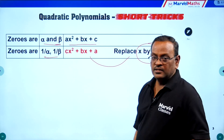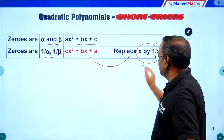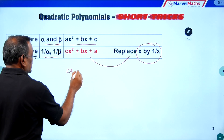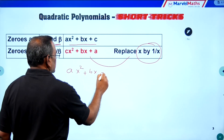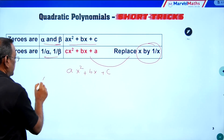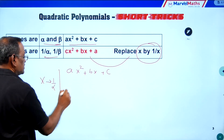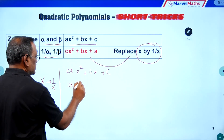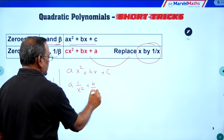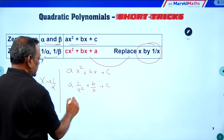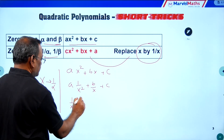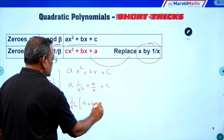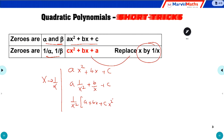So what is the short trick? Replace x by 1 by x. For example, take the polynomial ax squared plus bx plus c. If I replace x by 1 by x, it becomes a times 1 by x squared, plus b by x, plus c. Taking x squared as the LCM, this becomes a plus bx plus cx squared, all over x squared. Rewriting the numerator, we get cx squared plus bx plus a.